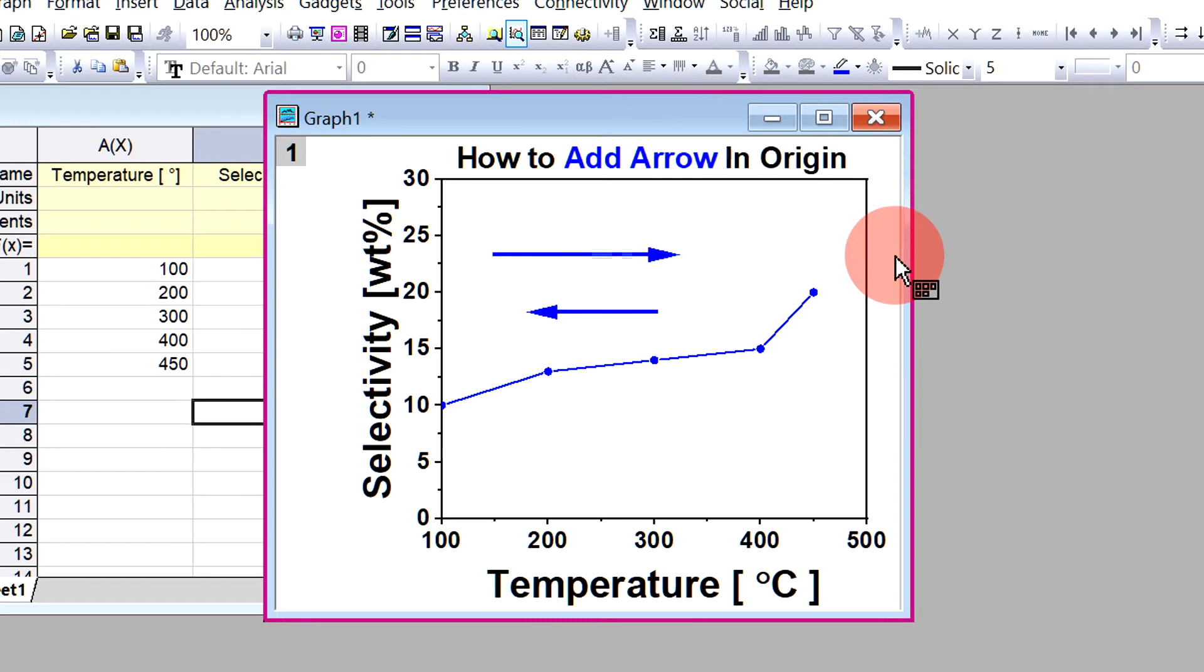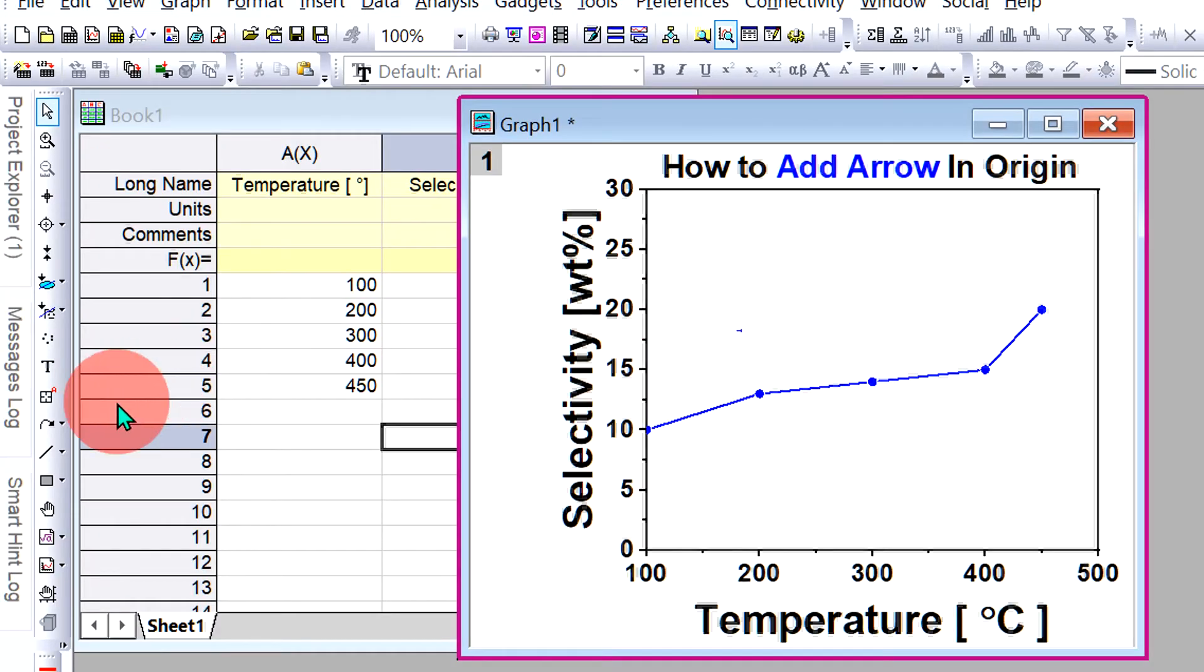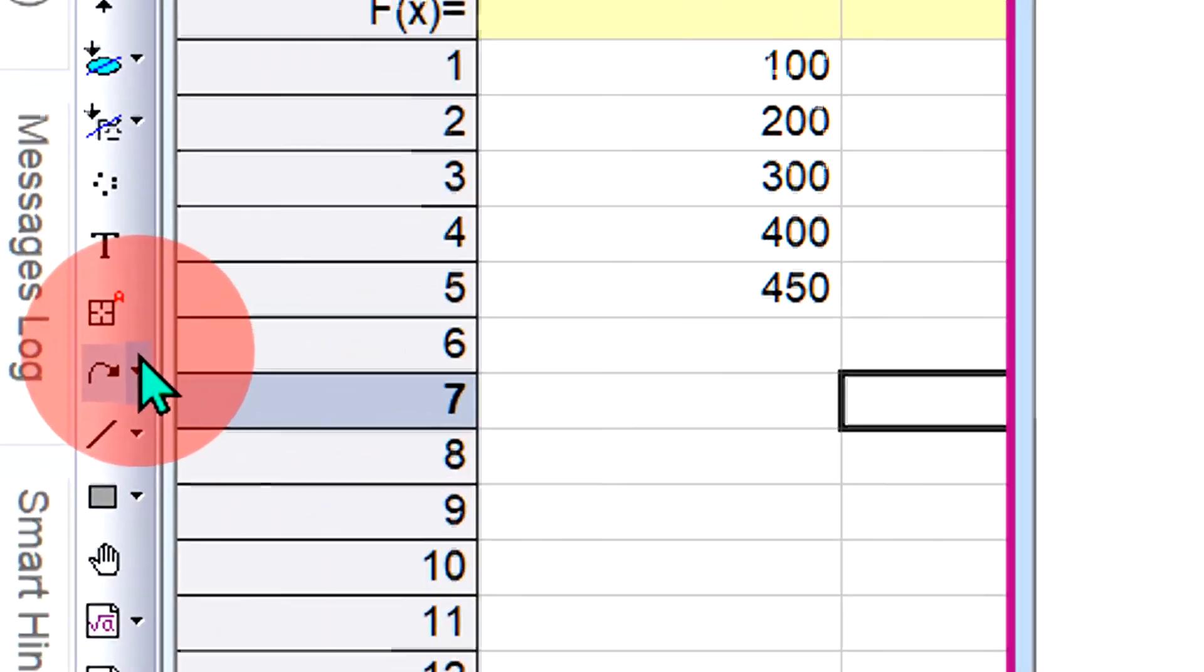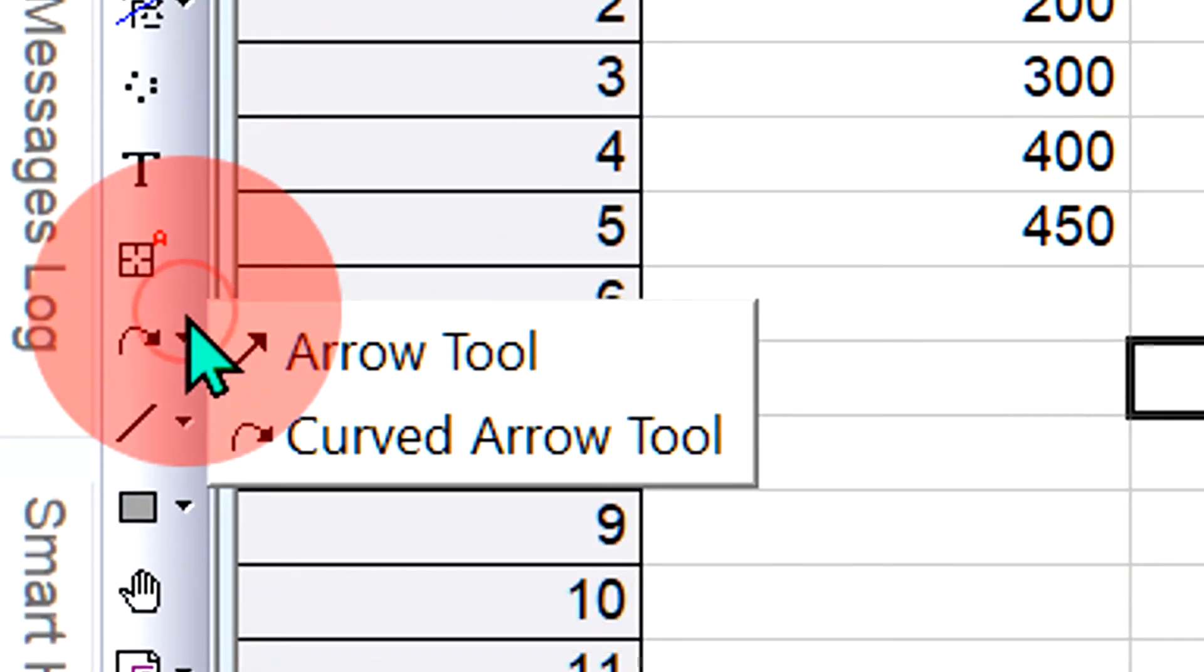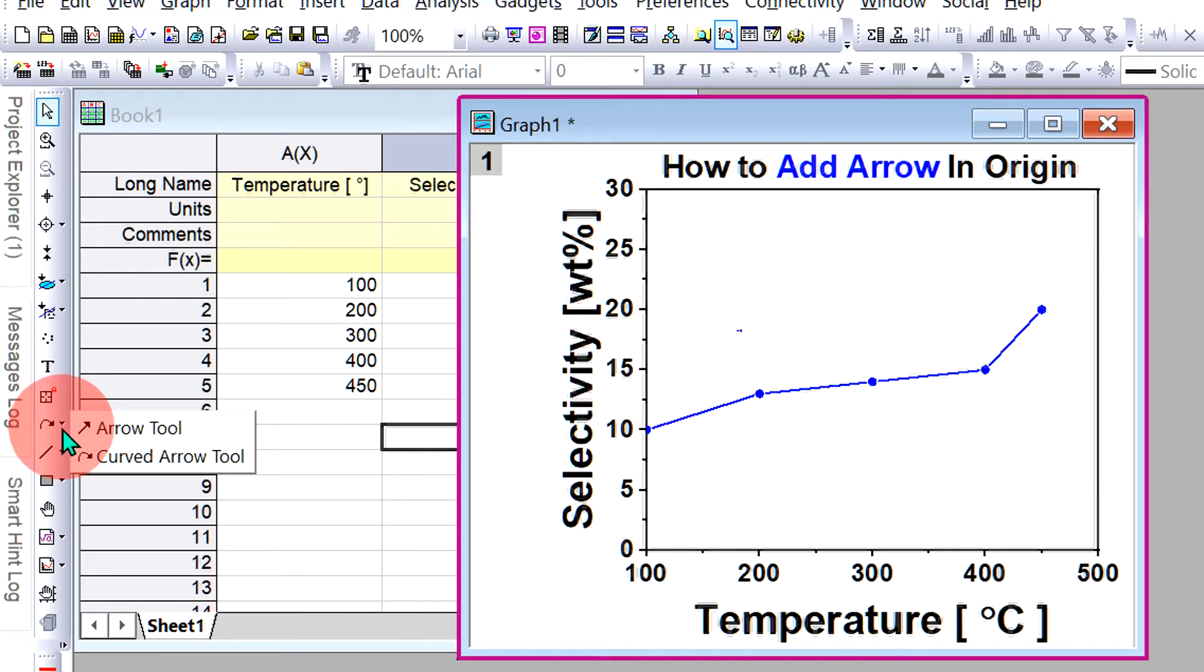First I will delete these arrows to show you. To add arrow at the right hand side of the screen you will see this option of arrow. Click on this small downward triangle and select the option arrow tool.